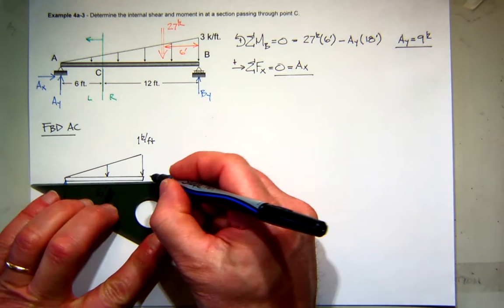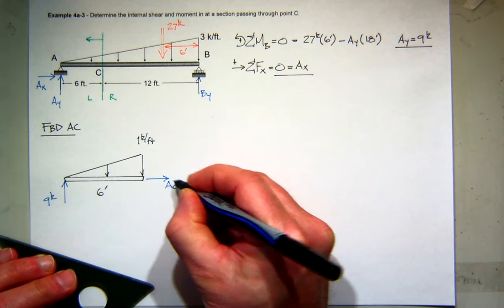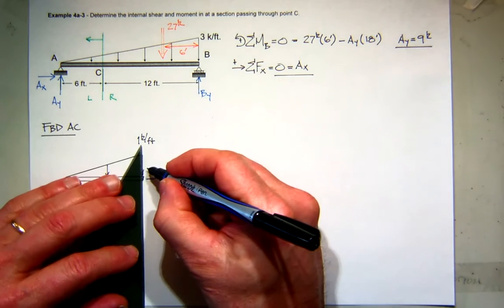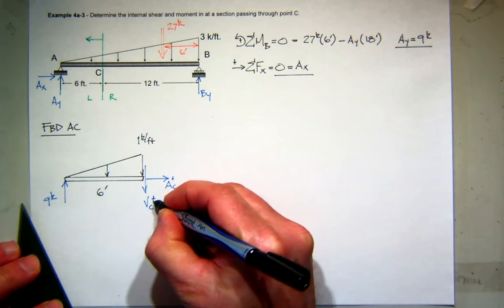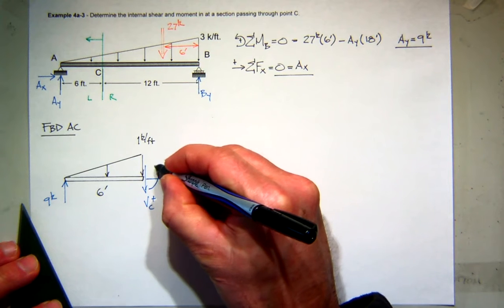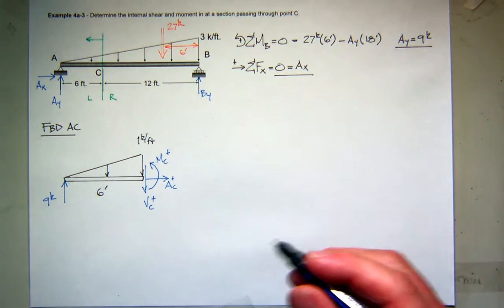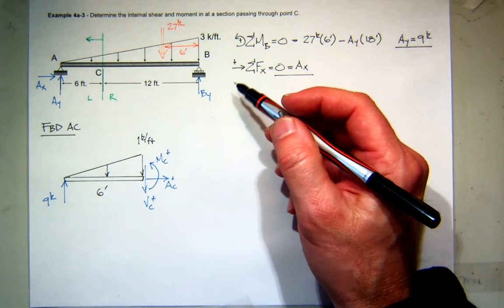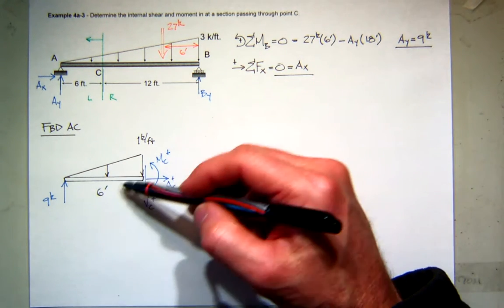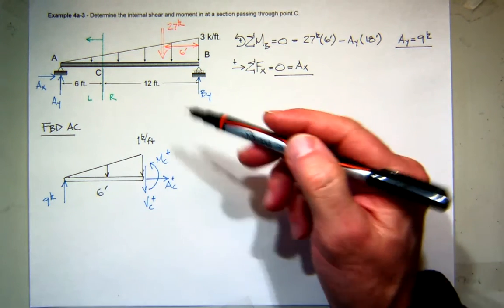And then I'll come and assume my positive sign conventions. There's the positive axial force at C. There's the positive shear force at C. And then there's the positive bending moment at C.